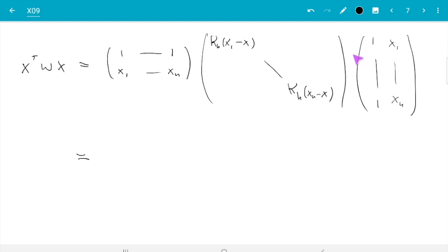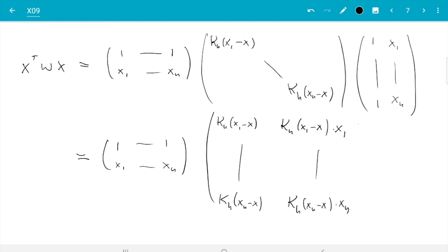There are two products. I do the second one first. Multiplying a diagonal matrix from the left to another matrix, just multiply the first row with the first element and so on up to the last row with the last diagonal element. So that we can do straight away. And then we get kh x1 minus x and kh x1 minus x times x1, up to down here kh xn minus x, kh xn minus x times xn. As I said, I just multiply each row of this matrix with the corresponding diagonal element.